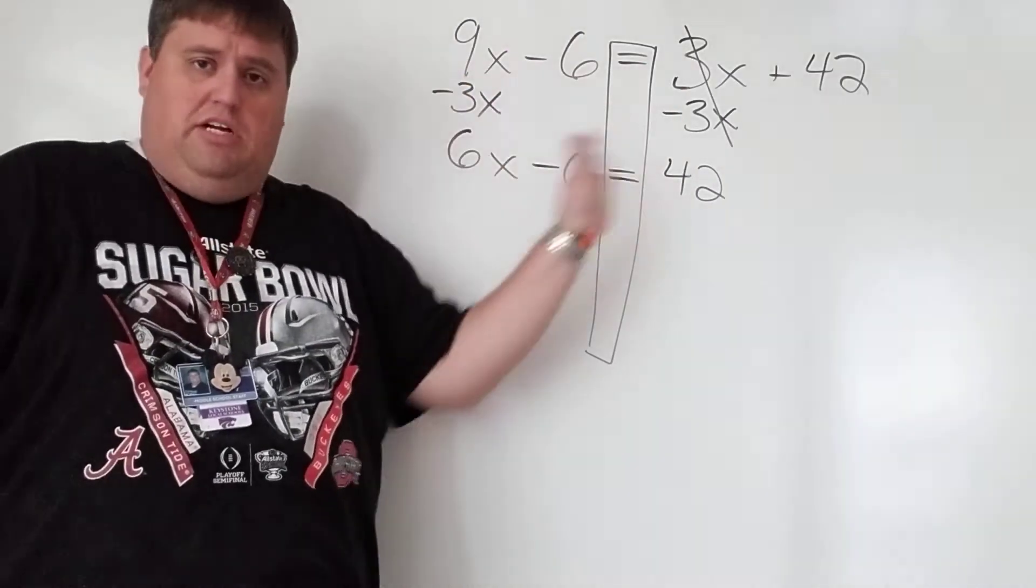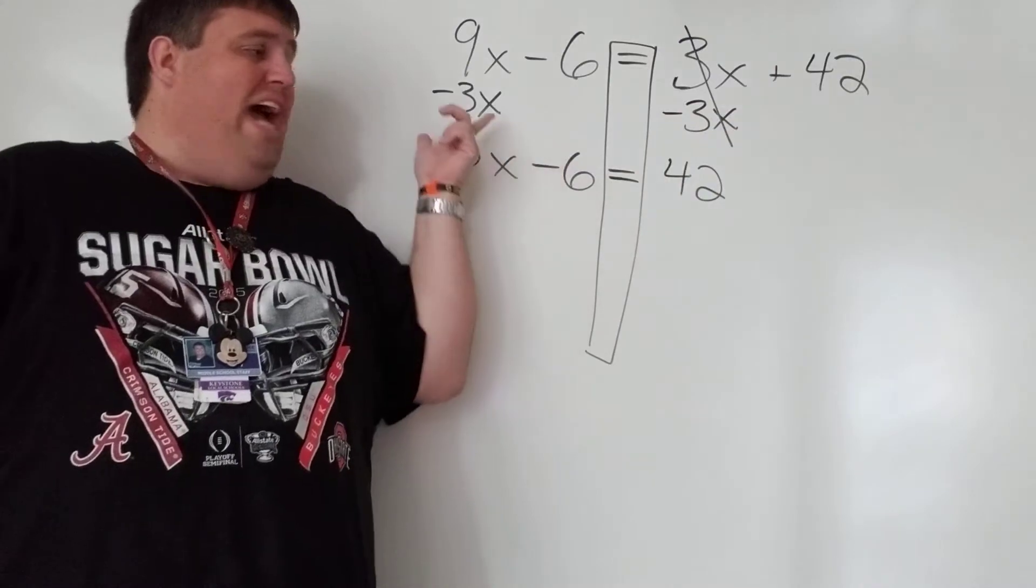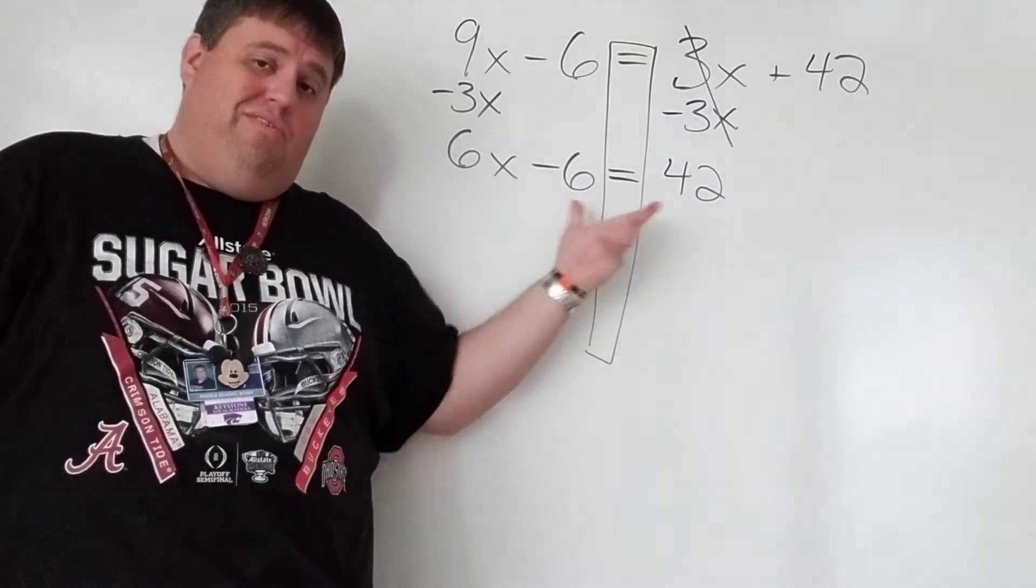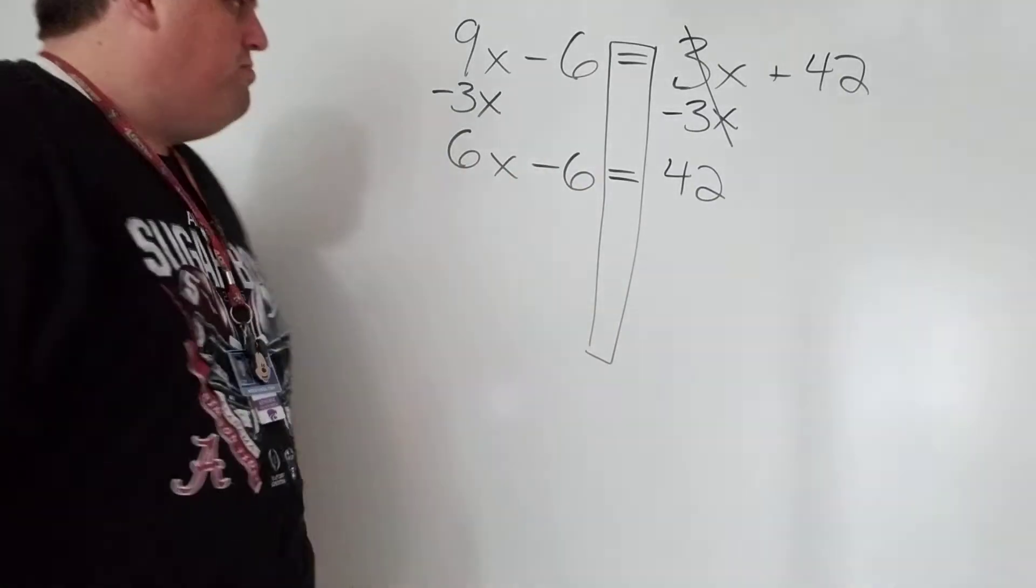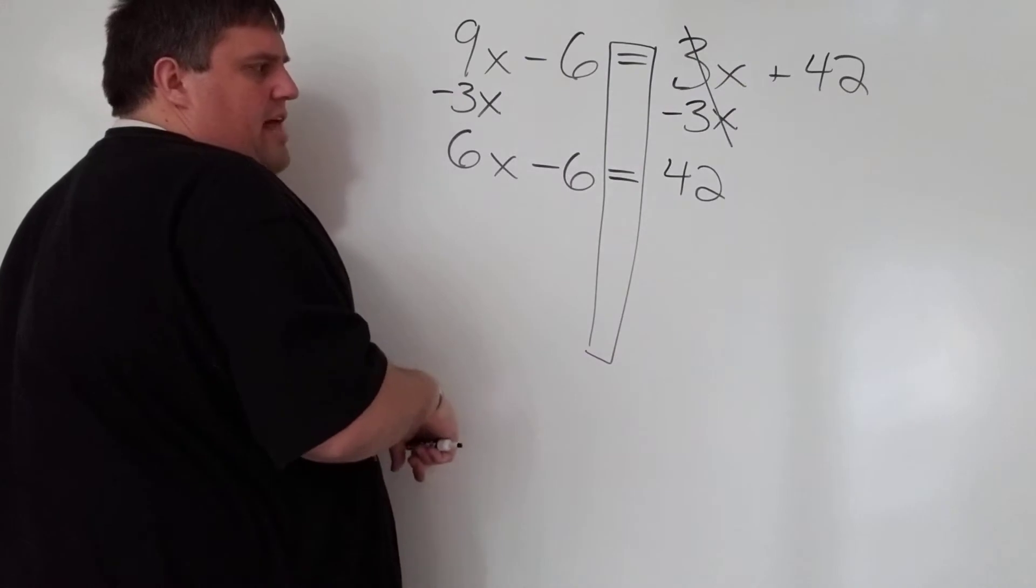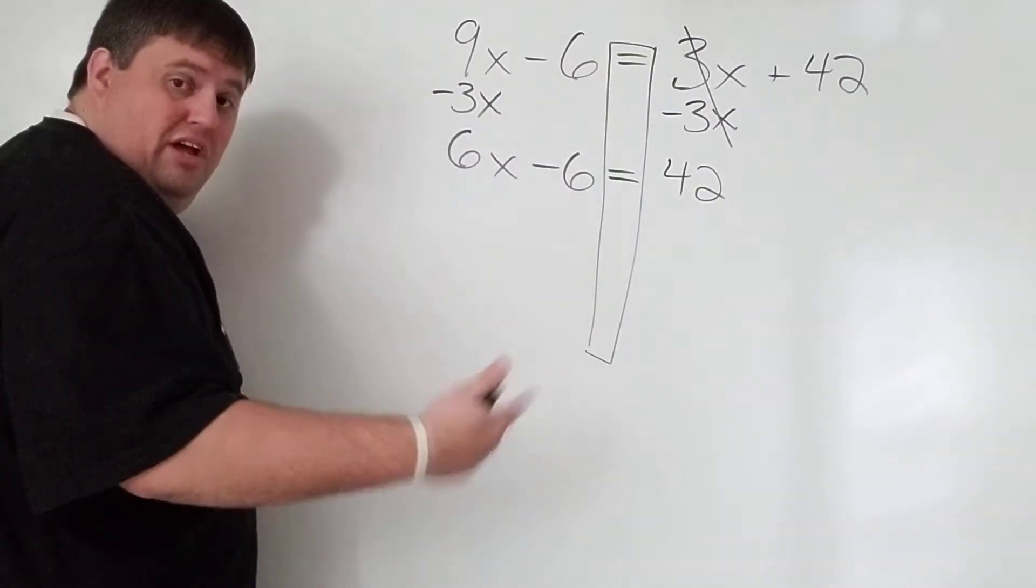I did all that stuff we talked about last week. I have variables on both sides. I got rid of a variable by subtracting 3x. If it was negative, I would have added 3x, whichever one. And then if you look down here, we are left with a two-step equation when I do that, which is great because we have already been doing that for a couple weeks.